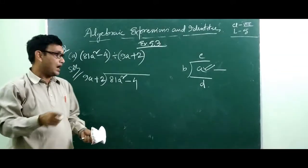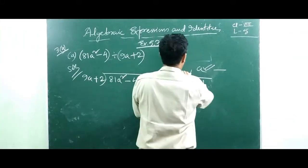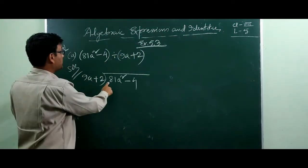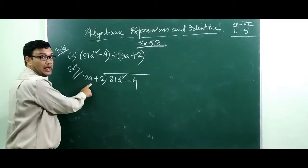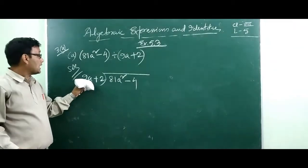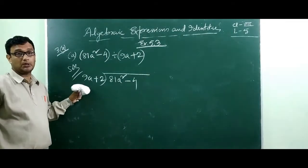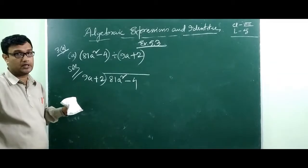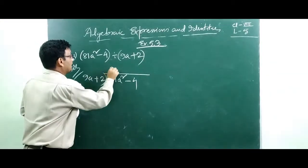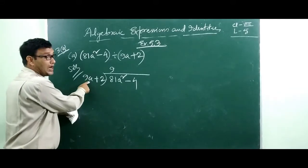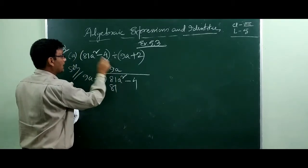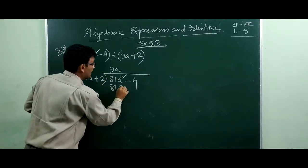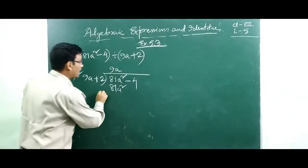So dividend and divisor are given. Now here 81a squared divided by 9a — by what number do you multiply 9 to get 81? That is 9. So 9 times 9 equals 81, and a times a equals a squared. Write 9a here as the first term of the quotient.